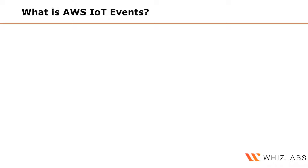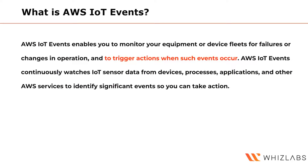So what exactly is AWS IoT Events? AWS IoT Events enables you to monitor your equipment or device fleets to detect failures or changes in operations, and when such conditional-based events occur, to trigger actions. It continuously monitors data coming in from sensors, different applications, AWS services, or processes, and identifies significant events so you can define and take action.